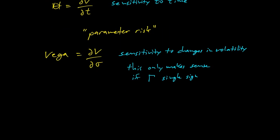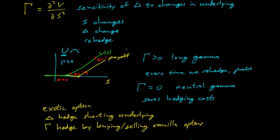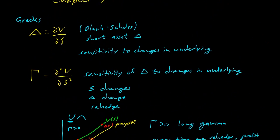Rho is the change of V with respect to R — sensitivity to the interest rate. Again, R is a parameter of the model, but taking the derivative with respect to R shows how changes in our interest rate assumption affect option valuation. If rho is very large, we might be at risk from a bad estimate of the interest rate. The Greeks give a way to talk about option pricing and think about how to implement hedges.